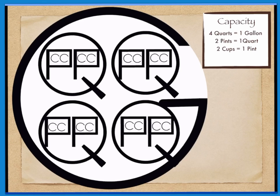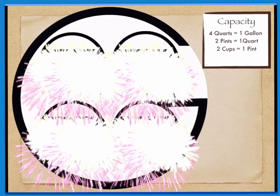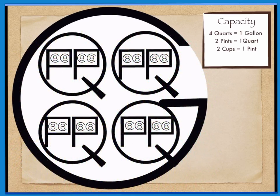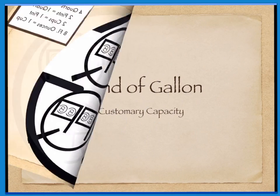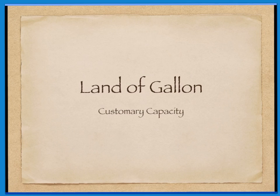And how old was each child? Each child was eight years old. And the eight represents the number of fluid ounces in each cup. Knowing about the Land of Gallon will help you to remember your units of capacity. Always draw a picture and always remember the Land of Gallon.